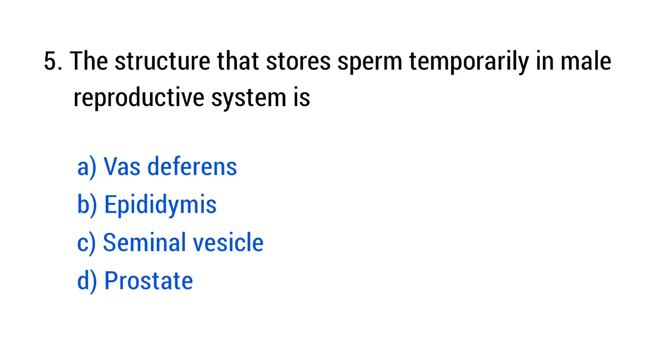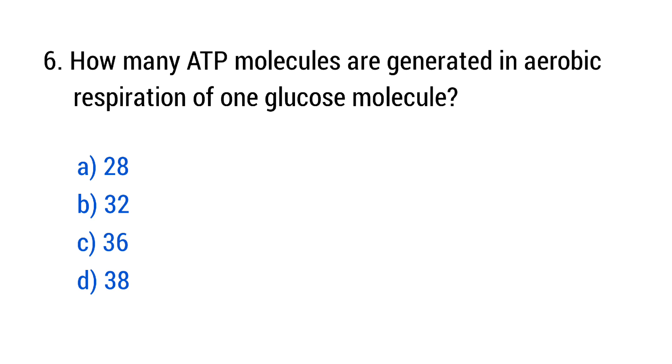Question number 5. The structure that stores sperm temporarily in male reproductive system is? The right answer is option B, epididymis. Question number 6. How many ATP molecules are generated in aerobic respiration of one glucose molecule? The right answer is option D, 38.